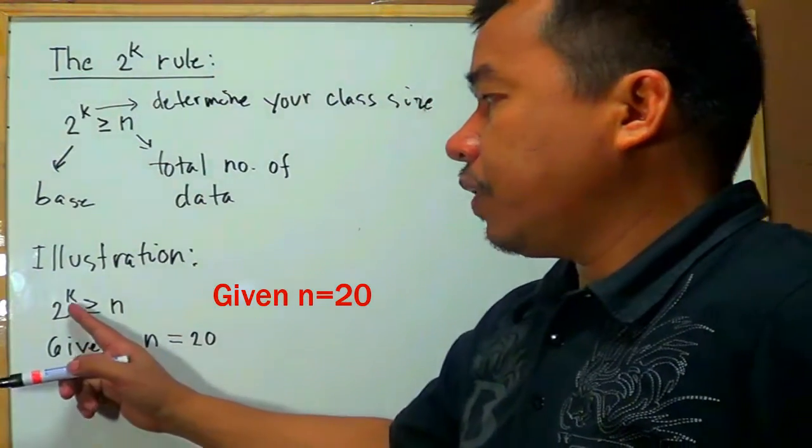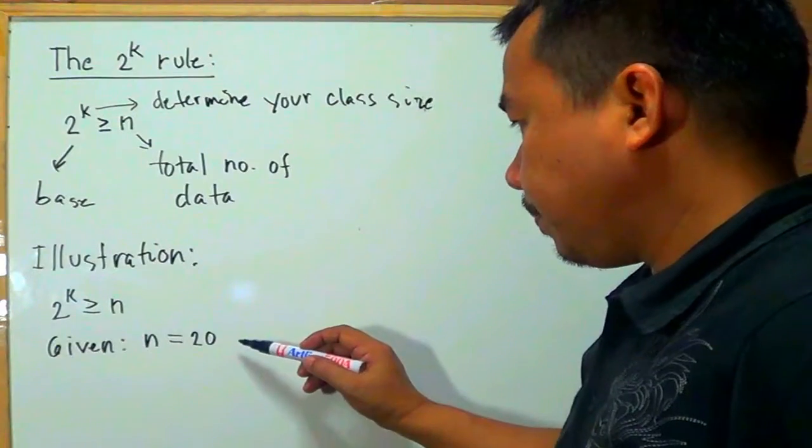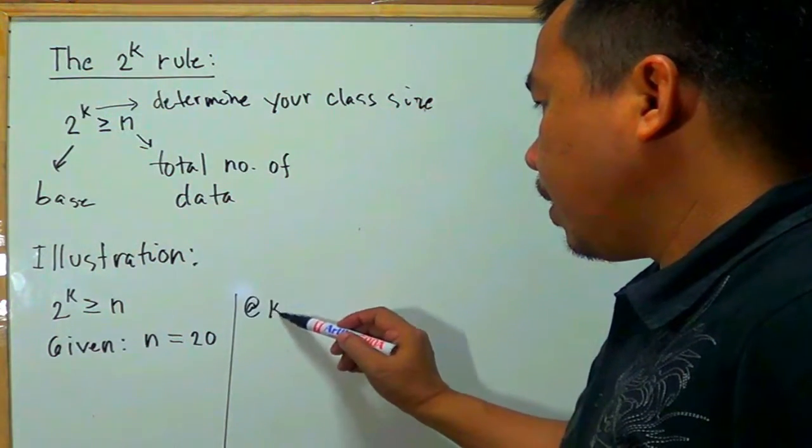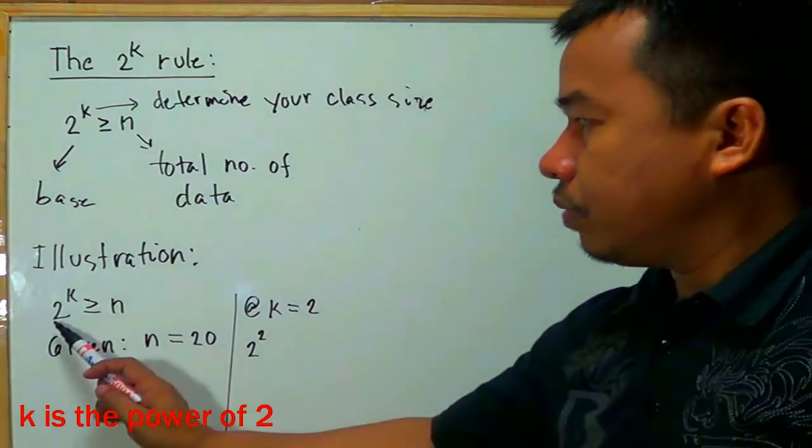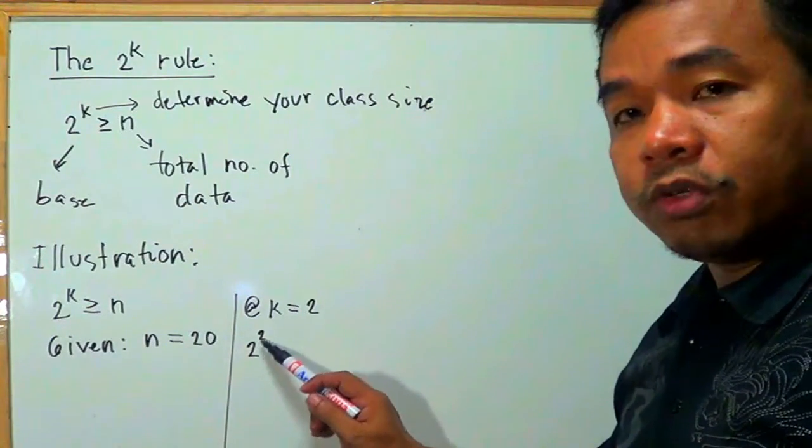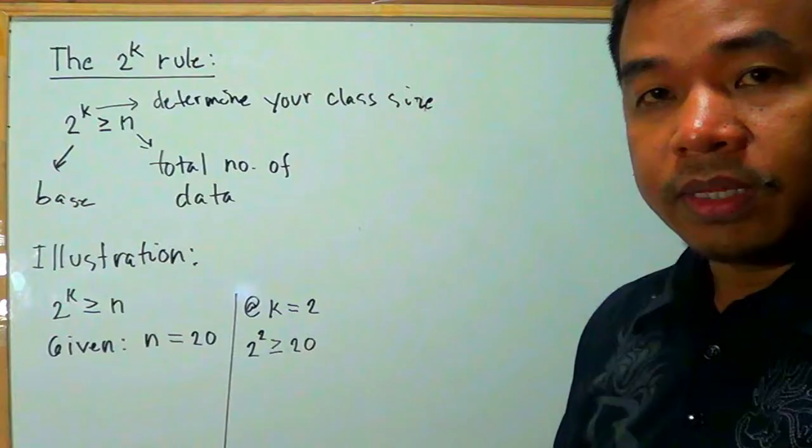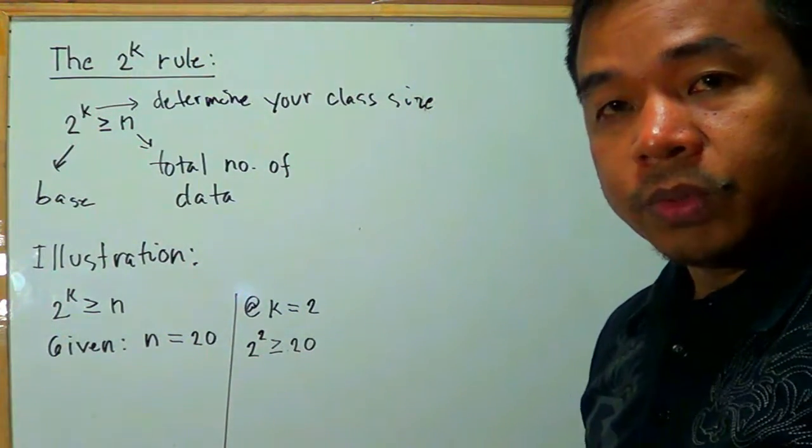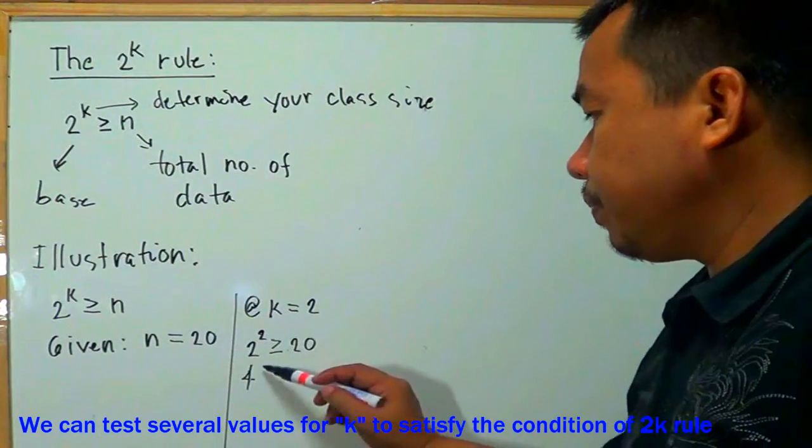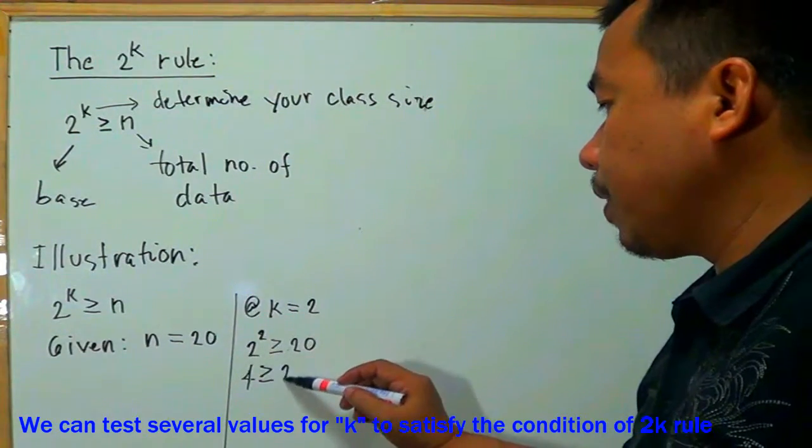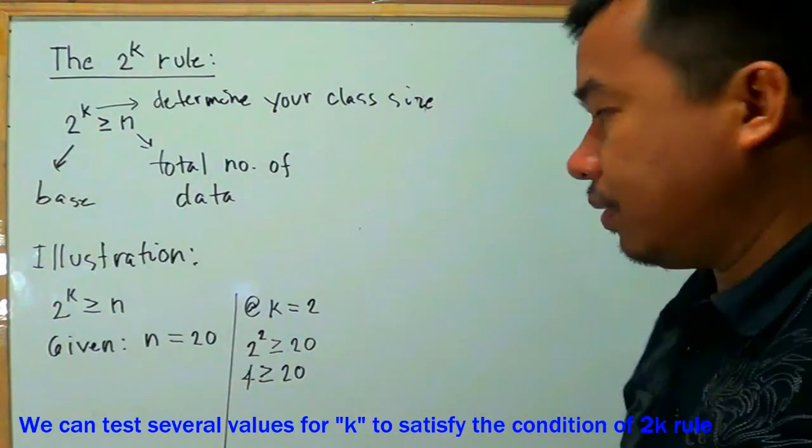Next, you have to find the value for k, and then by mathematical manipulation. Here, k equals 2, for example. 2 raised to k, so 2 raised to 2, where your k is equal to 2. Let's try if this is greater than or equal to 20. By applying the power of 2 to the base 2, this 2 raised to 2 gives you 4. And 4 is greater than or equal to 20. Is this true that 4 is equal or greater than 20? No, this is not.